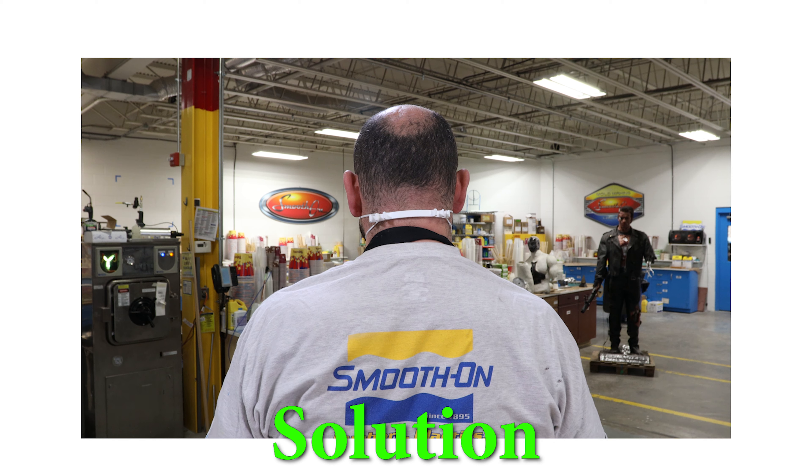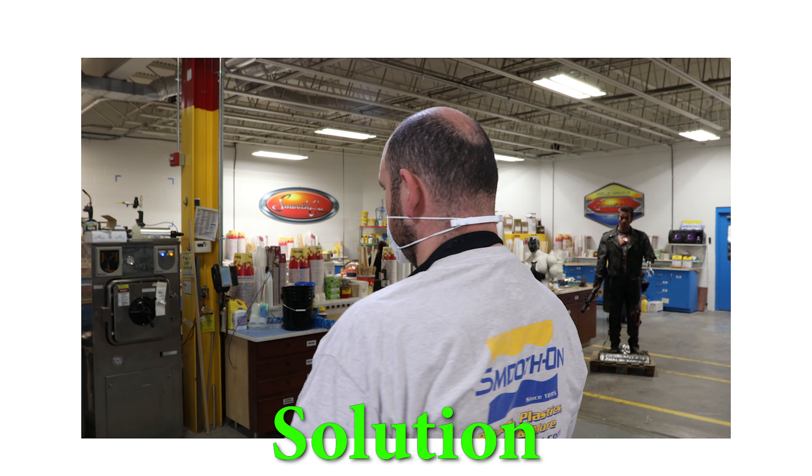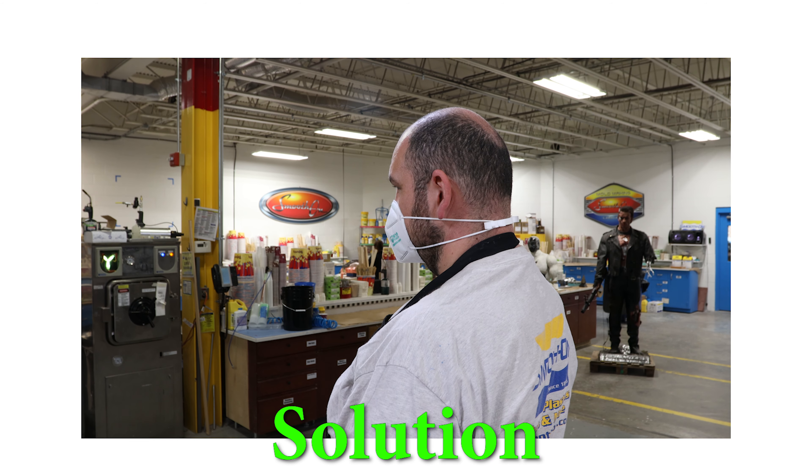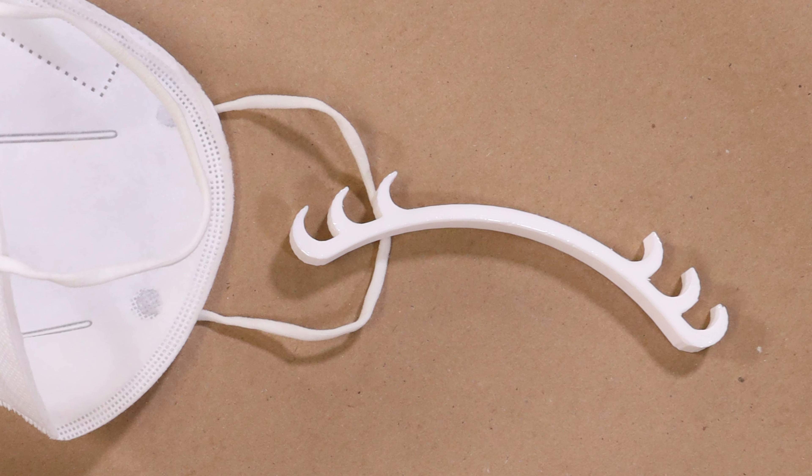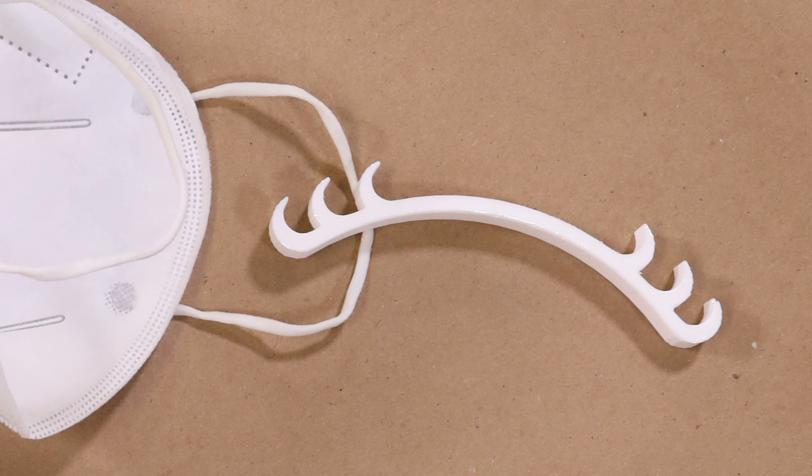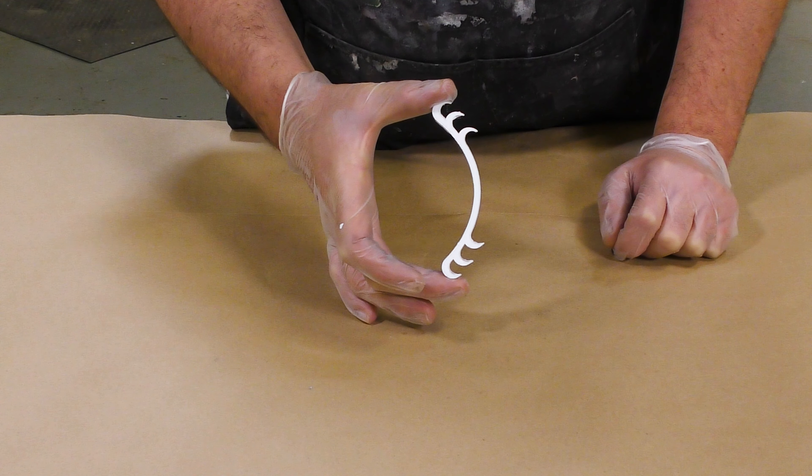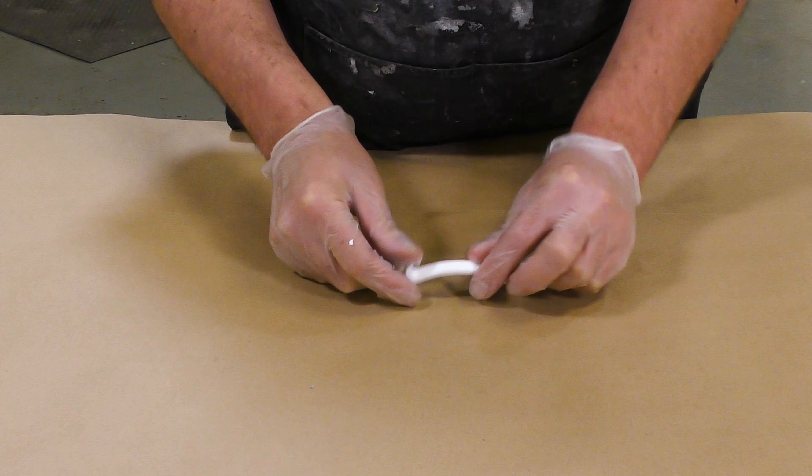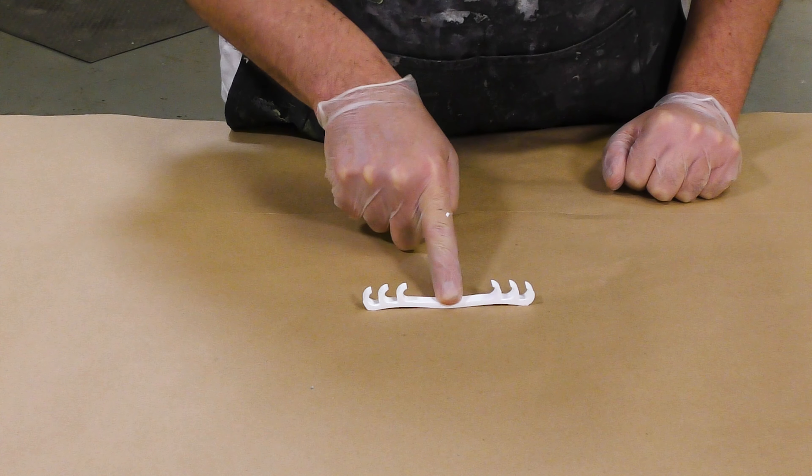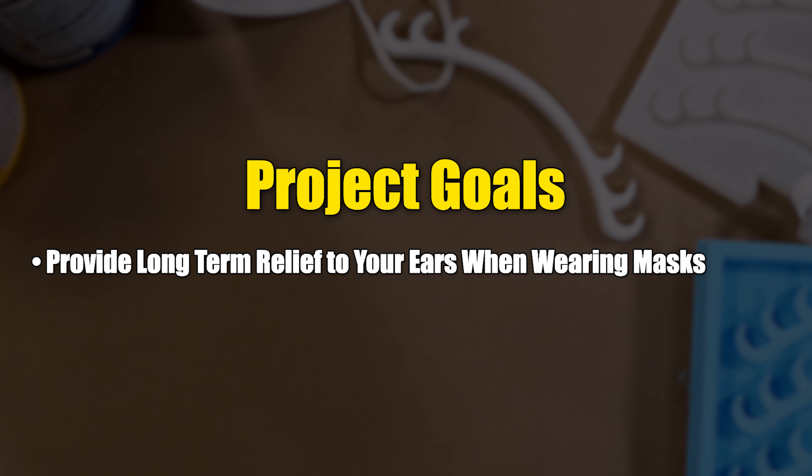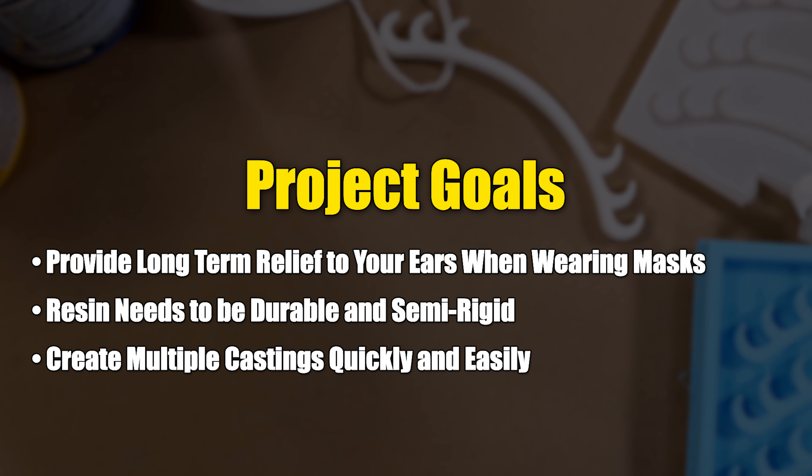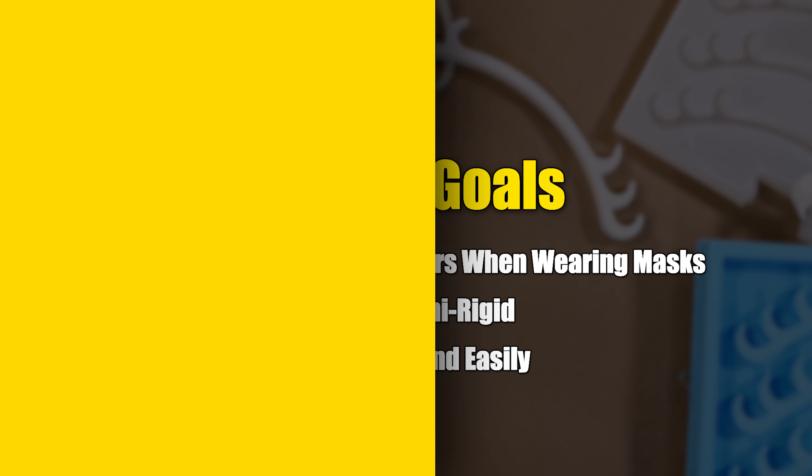They're basic shapes and easy to reproduce. For the project itself, we wanted to make sure we chose the right product. So it has to be impact resistant or semi-rigid bendable, but yet strong and durable. The goals that we're wanting to meet is to provide long-term relief to your ears when wearing these masks. We want to make sure that we choose the right casting resin that's durable and create a multi-casting gang mold quickly and easily.